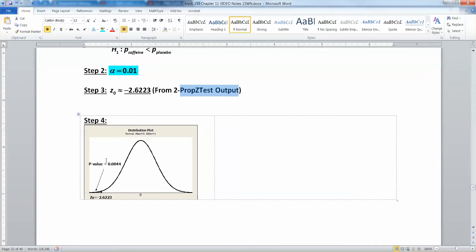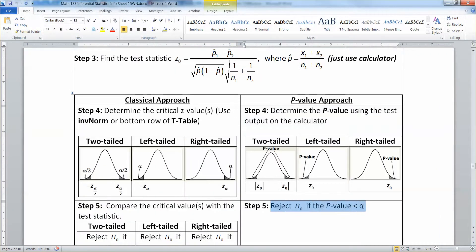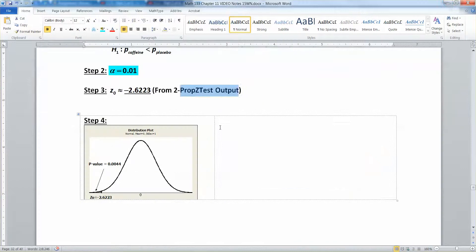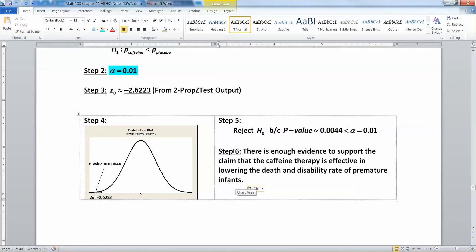Now we need to make a decision. In the p-value method, we always reject if our p-value is less than alpha. You always want low p-values, definitely lower than alpha for sure. This one is 0.0044, which is less than alpha which was 0.01. Therefore, we are going to reject the null hypothesis, and that means that there is enough evidence to support the claim that caffeine therapy is lowering the rate of death and disability in premature infants, which would be a good thing.